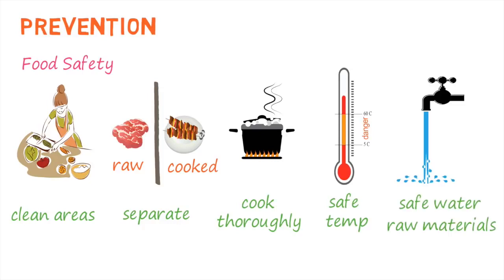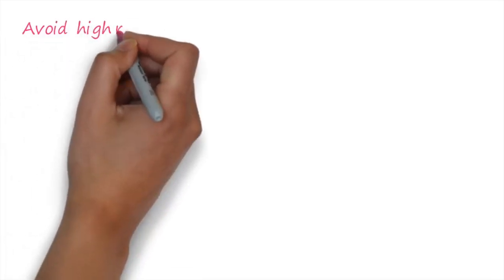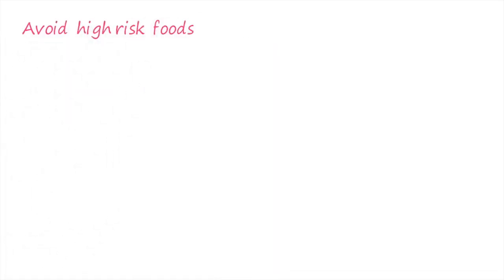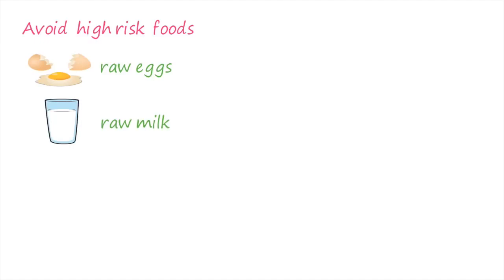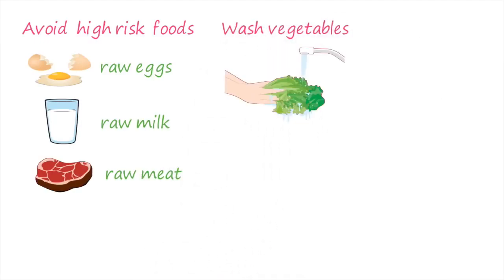Using safe water and raw materials to prepare food is also important. To reduce the chance of being infected, high-risk foods that may contain the bacteria should be avoided. This includes raw eggs, unpasteurized milk, and raw meats. Fruits and vegetables should be washed carefully, especially if they are eaten raw.